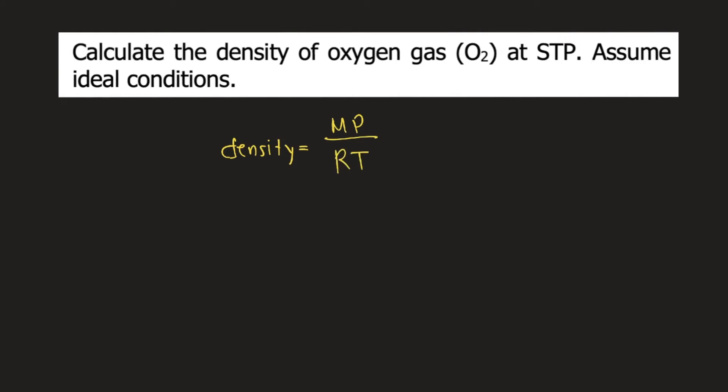If you want to see how I derived this equation from the ideal gas equation, you can check the description box. Capital M is the molar mass of the gas. In our problem, this is oxygen gas. The molar mass of oxygen gas is 32 grams per mole.